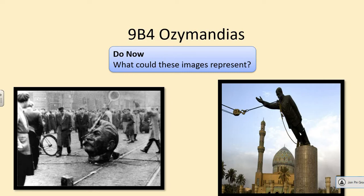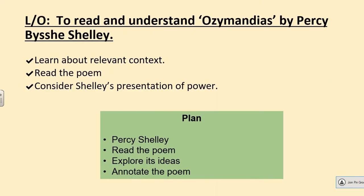We can only hypothesize from these images as to who decided to pull them down, but certainly these people who once had power now appear not to — or certainly people dislike them greatly — which underlines the poem Ozymandias in a lot of ways.